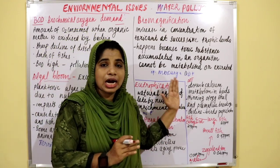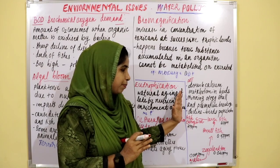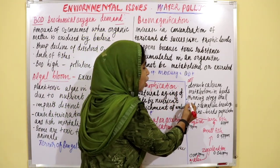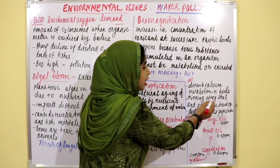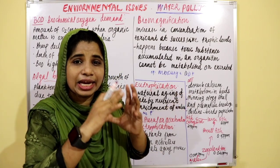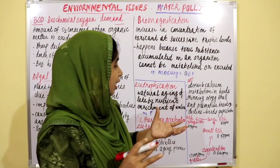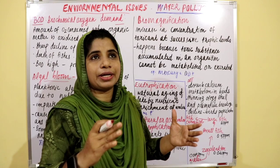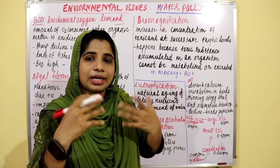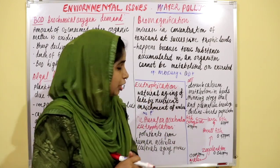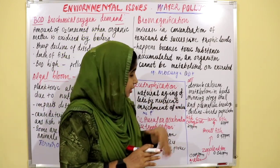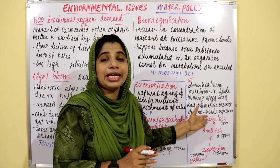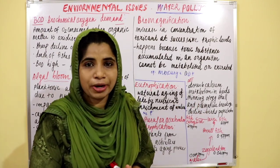DDT disturbs calcium metabolism in birds, leading to thinning of eggshells and premature breaking of eggs. This results in a decline in bird population.